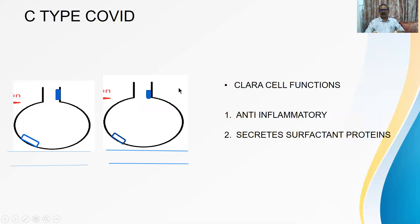What are the functions of CLARA cells? There are many functions, but for our interest, two functions are important. First function is it has an anti-inflammatory role. So this CLARA cell tries to dampen the unnecessary inflammatory reaction.